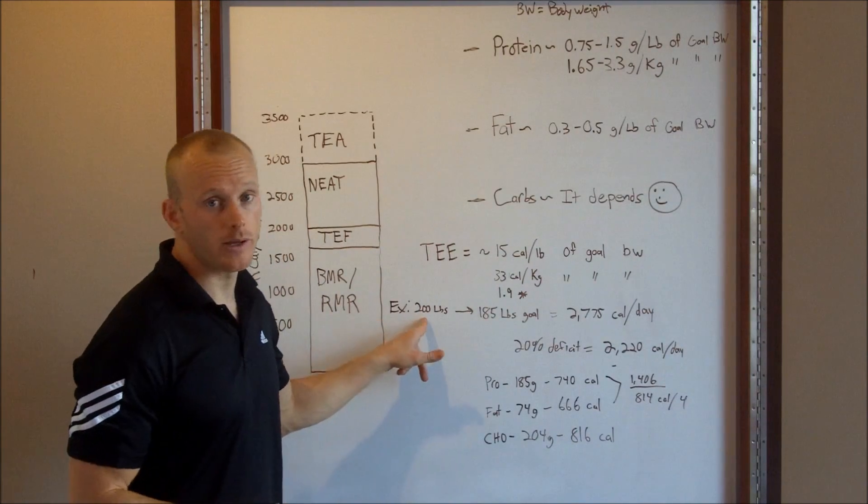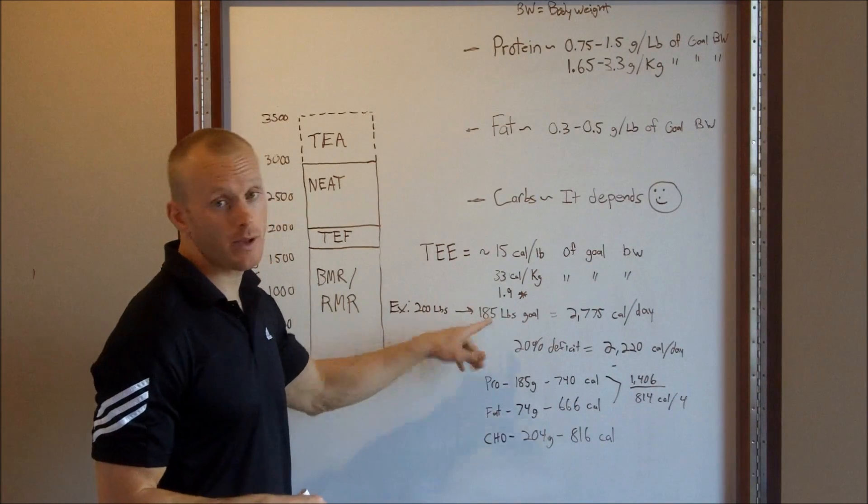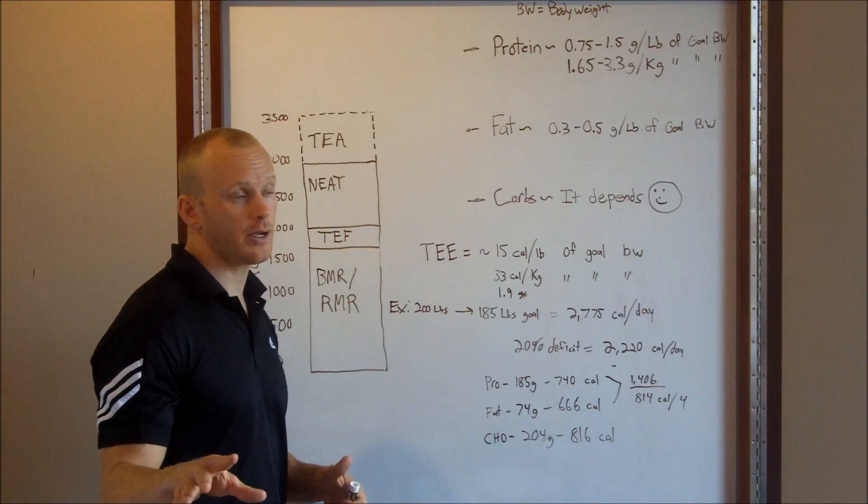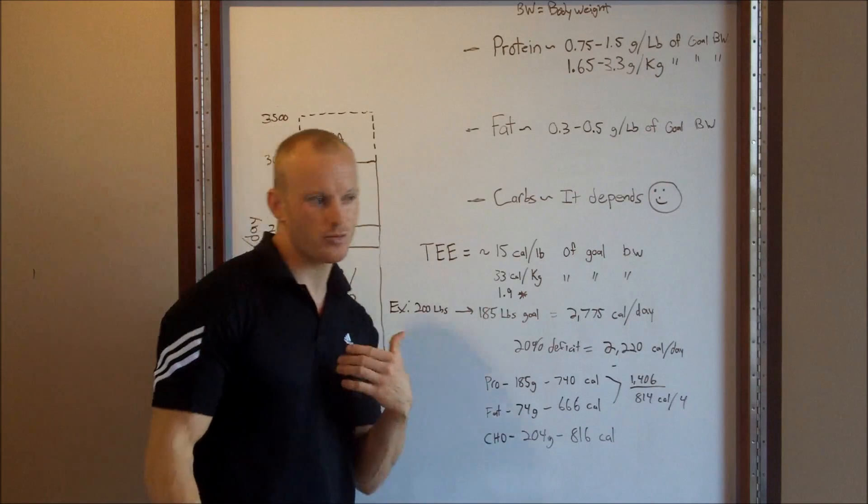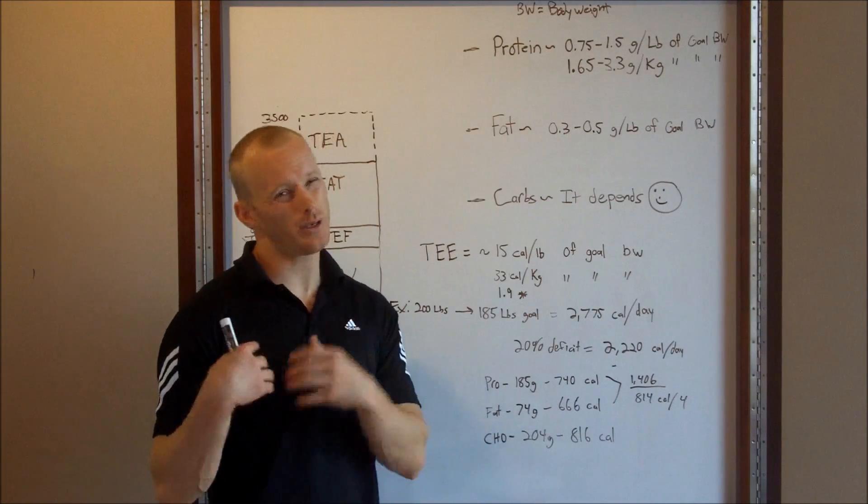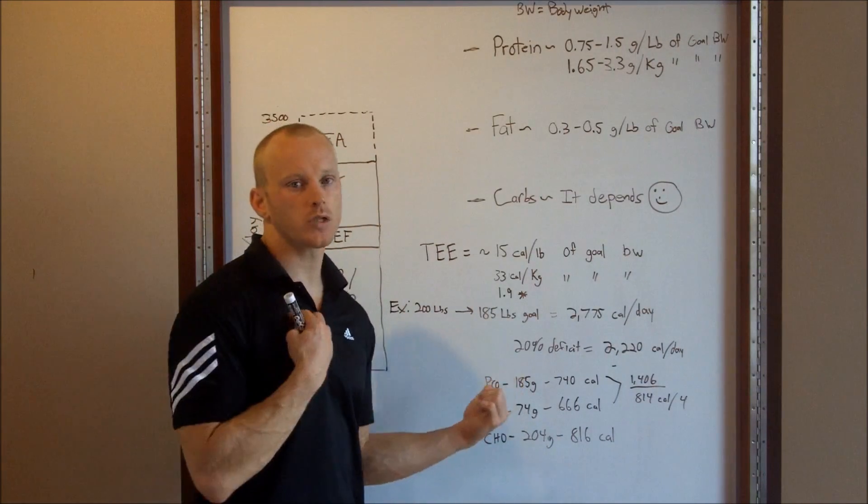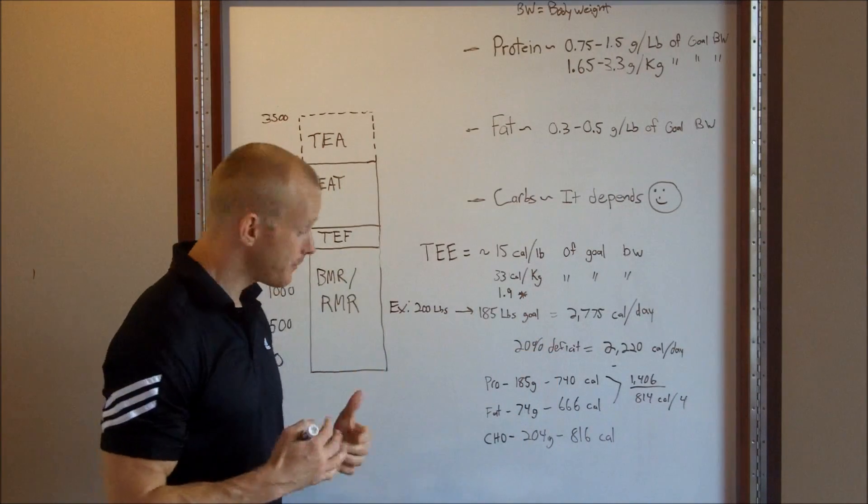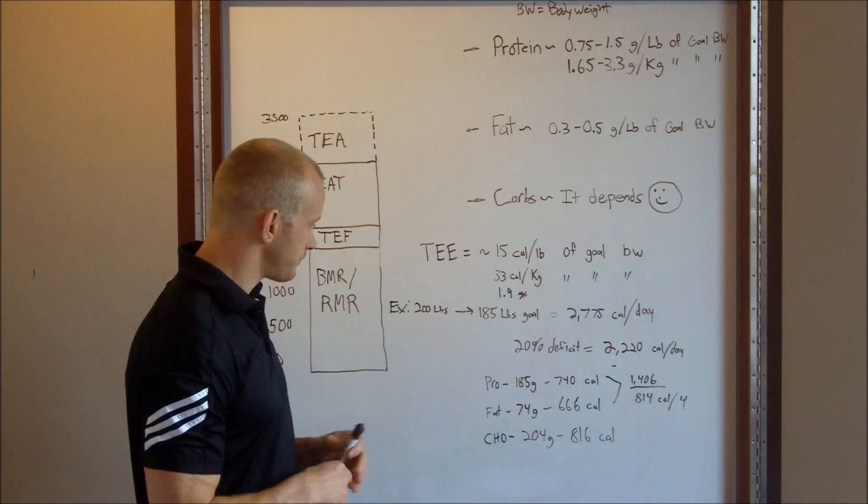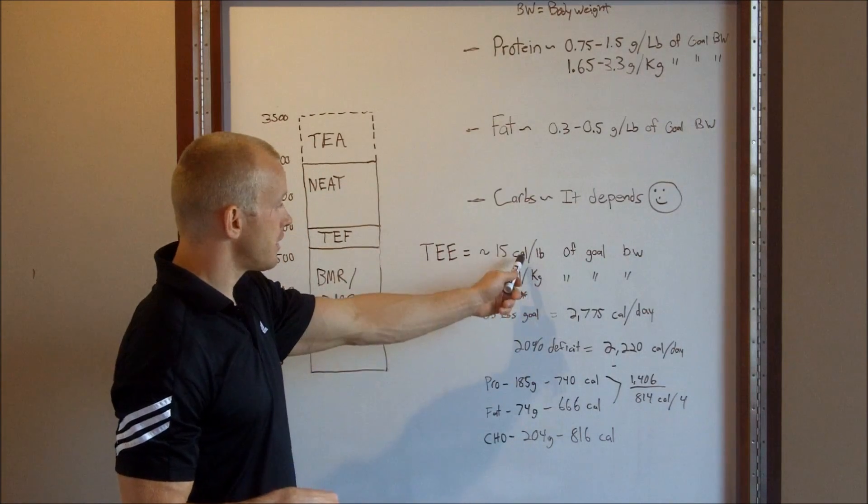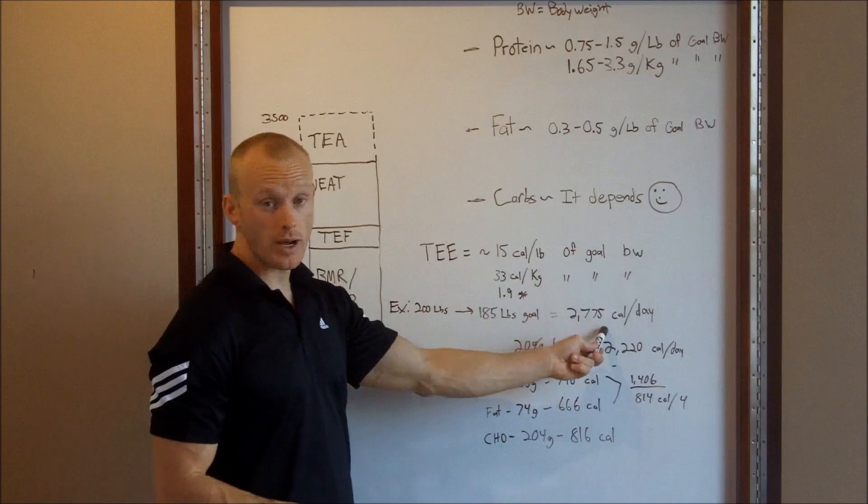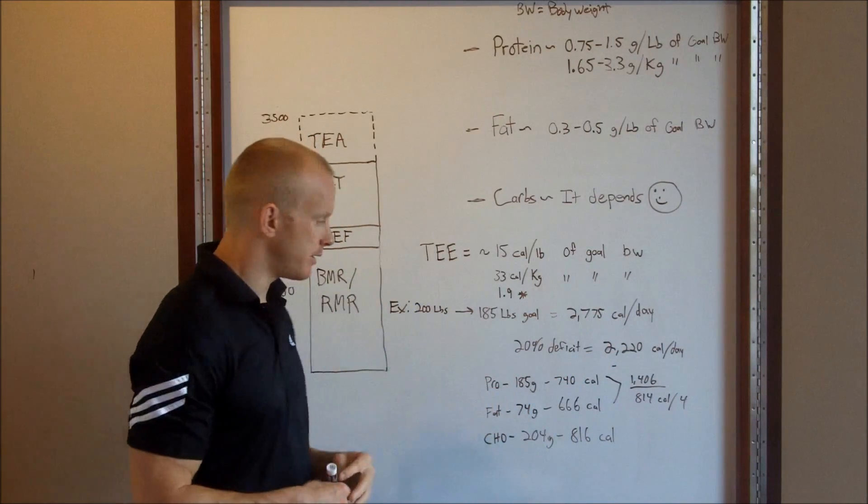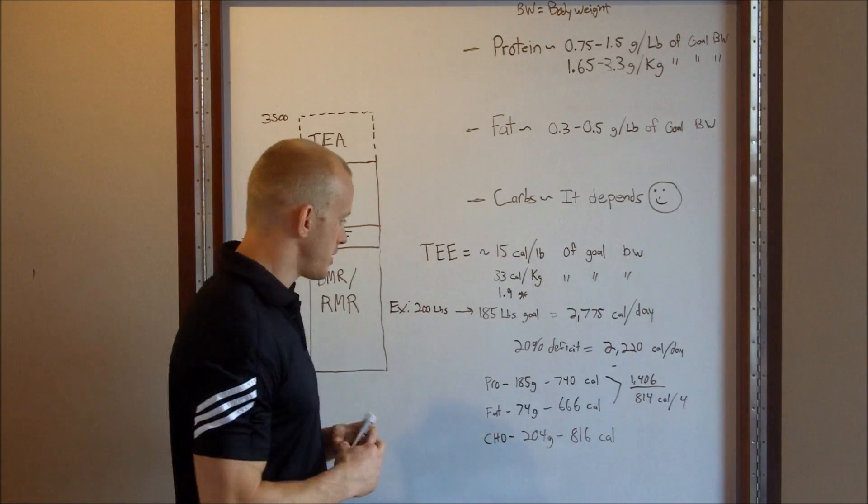So, let's just say I weigh 200 pounds. I want to lose 15 pounds. My goal body weight is 185 pounds. And real quick, I'm not huge on the scale, by the way, for measurement because there's water weight and things like that are going to vary, so pictures are your best thing. But for the purpose of calculating this, we need a number. So let's just say 185 pounds. I want to be lean, I want to see my abs, all that fun stuff.